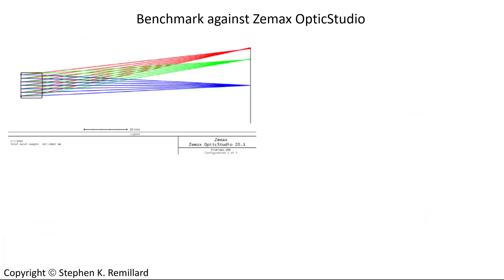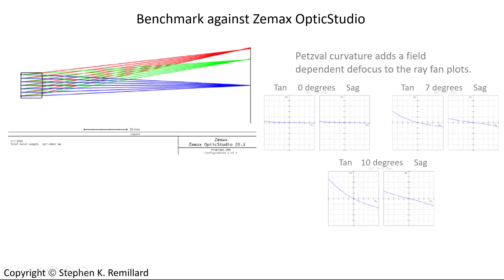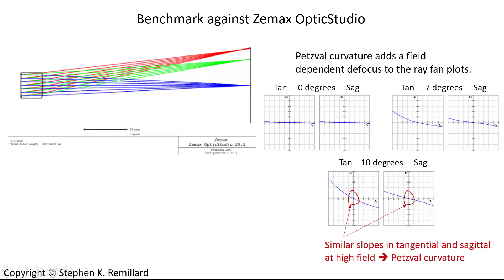This can be benchmarked against Zemax OpticStudio. That is the lens, and three different fields are being used up to 10 degrees. The ray fan plots actually show Petzval curvature in them. In the two ways you can see it, Petzval curvature going as a function of H times rho squared is no different than defocus, except that it's field-dependent. So as you go to higher and higher fields from 0 to 7 to 10, you get more of it. Otherwise, it looks exactly like defocus if you only have one field to look at. So this increasing slope is an indication of field curvature.